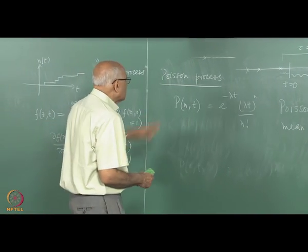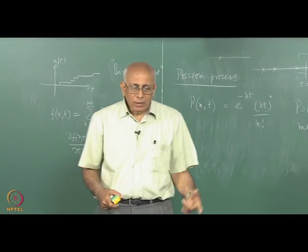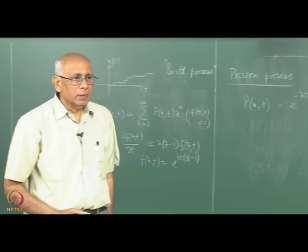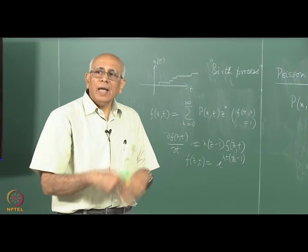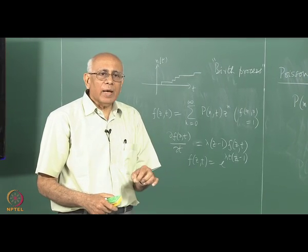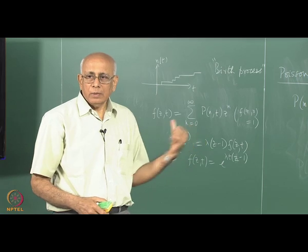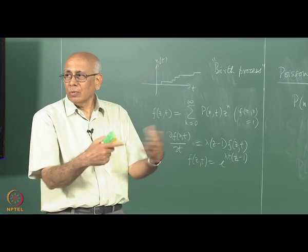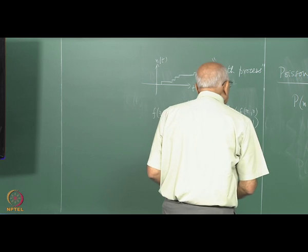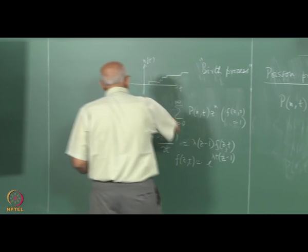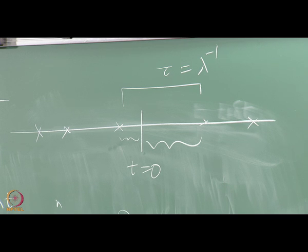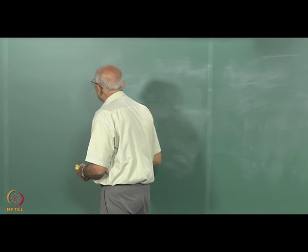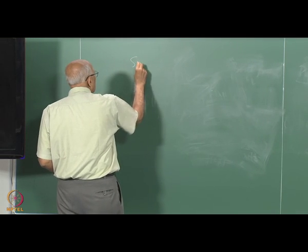So much for the Poisson process. We will look at other processes governed by a Poisson process — in fact, a whole family of random walks where something else happens at instances given by a Poisson process. The simplest of these is the simple random walk, so let's proceed to that.